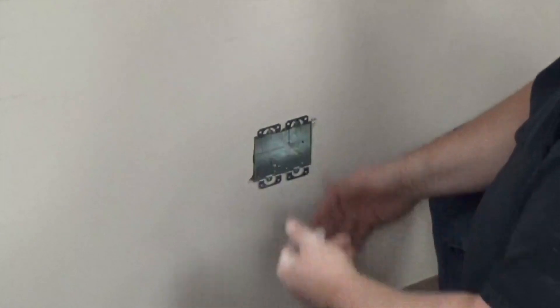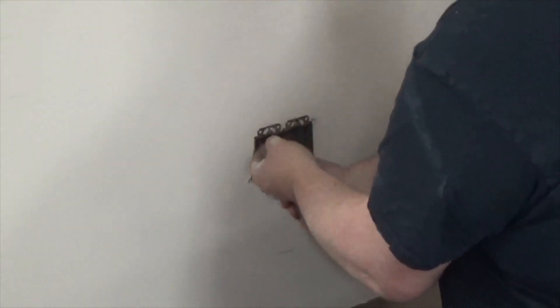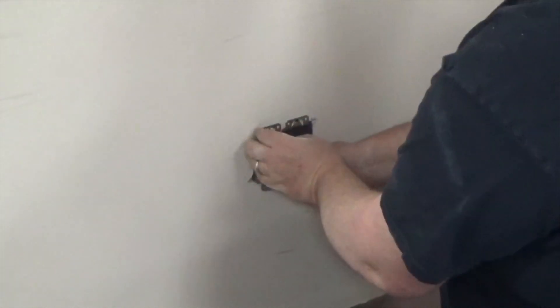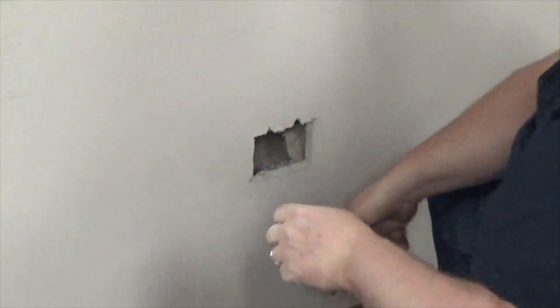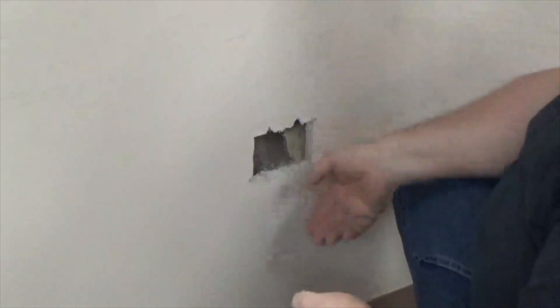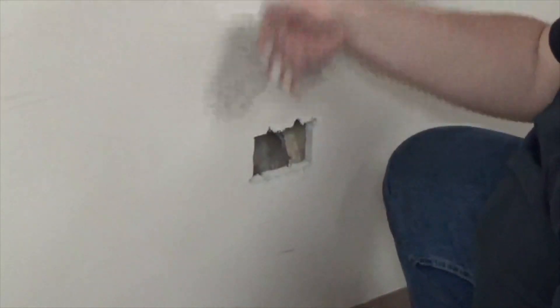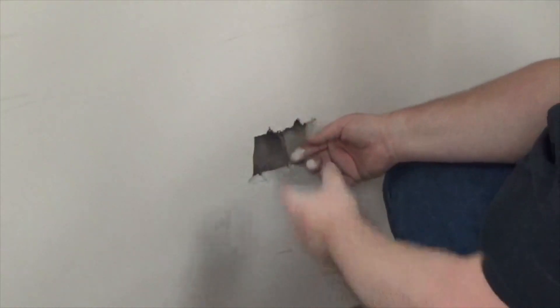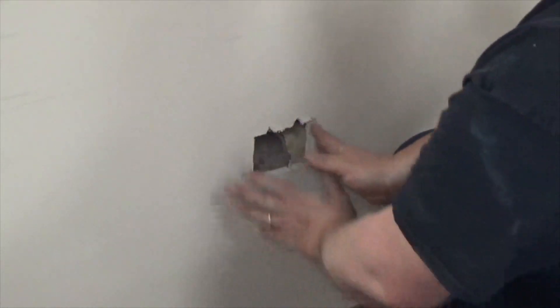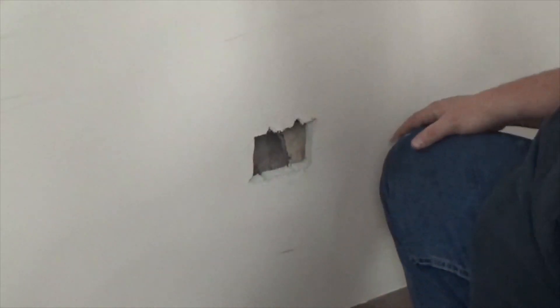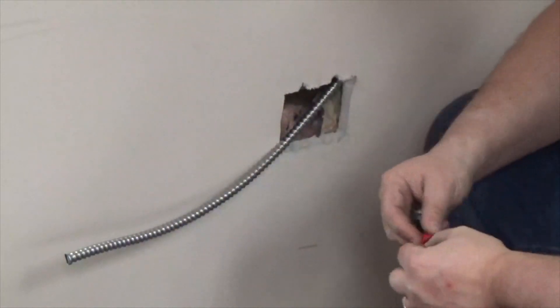So using MC cable, we have to do something first. We actually have to take the box out. We'll take the box out. And then what we'll do is, what we'll do is we'll snake the wire down. And then what we'll have to do to connect it, we have to actually put a connector on the box. So we'll pull the wire down. We'll put the connector on. We'll slide it up and then we'll slide the box in. And then I'll show you how to strap it with Madison straps.